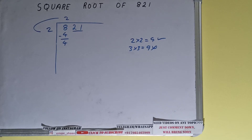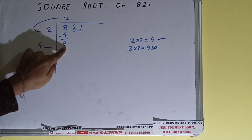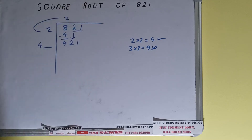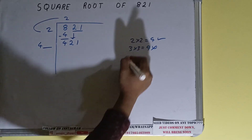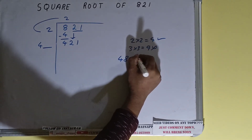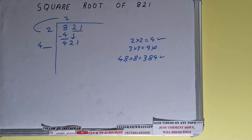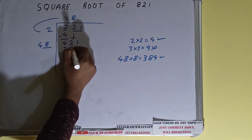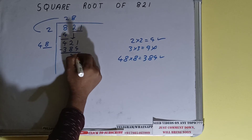We did 2 into 2, so do 2 plus 2, it will be 4. Keep one digit extra and this number we need to make it big so that we can divide. Bring the next pair down and it will become 421. Whatever number we write here we have to write here also. If we try 8, that is 48 into 8, it will be 384, and that is good to take. So 8 here and 8 here, 384.